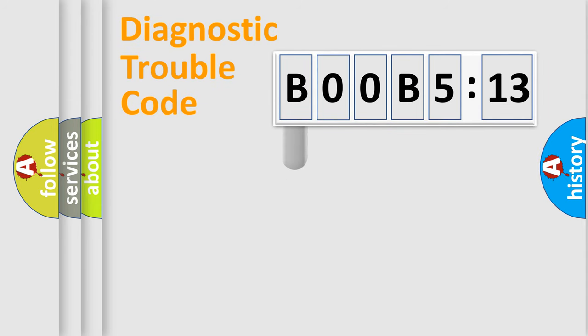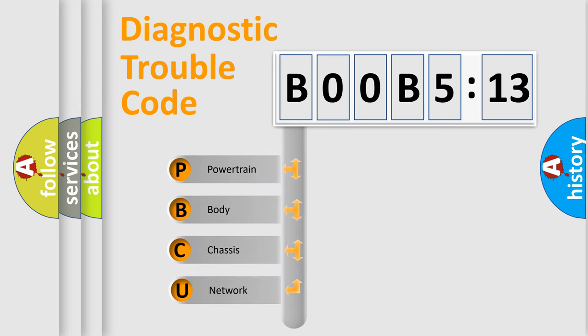First, let's look at the history of diagnostic fault code composition according to the OBD2 protocol, which is unified for all automakers since 2000. We divide the electric system of automobile into four basic units.